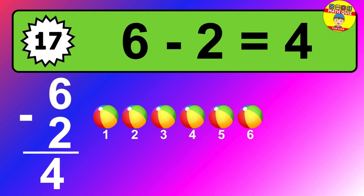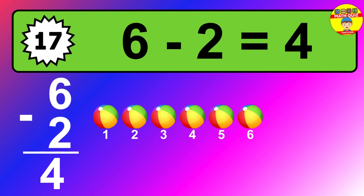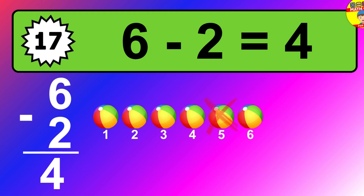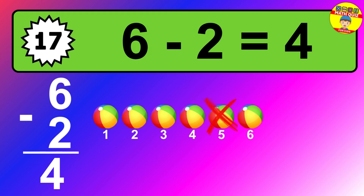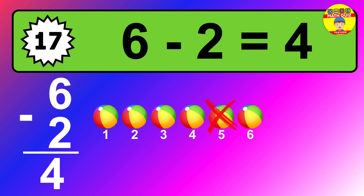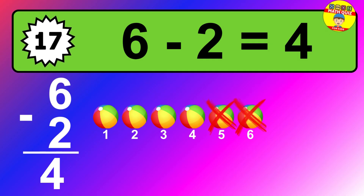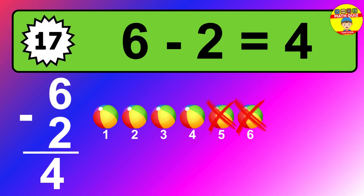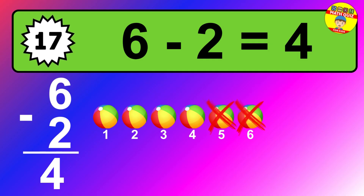Question 17. 6 minus 2 equals what? So the answer is 6 minus 2 is 4. Let's count it. 1, 2, 3, 4.